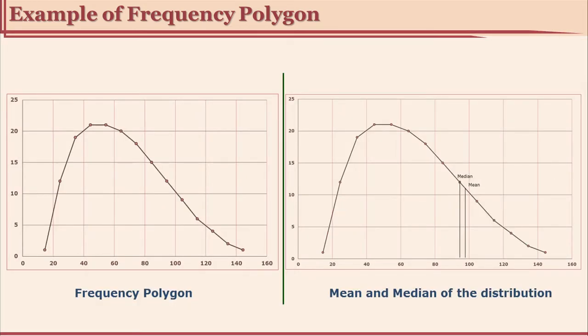Can we plot mean and median on our frequency polygon? Yes, we can. Mean, median, and mode are measures of central tendency and are also used to describe the distribution. If you find your mean and median, you can show them on a frequency polygon. In this example you are seeing a frequency polygon without mean and median, and a frequency polygon with mean and median.